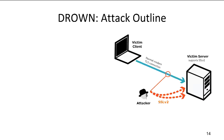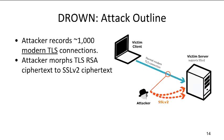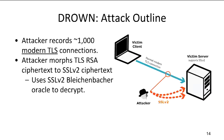Let's come back to the DROWN attack outline. The attacker observes TLS connections, records roughly 1,000 of them, and can hope to decrypt roughly one out of those thousands. The attacker then tries to morph a TLS RSA ciphertext into an SSLv2 one — remember, those are slightly different because the lengths are slightly different — and uses the SSLv2 Bleichenbacher oracle we just described to identify when a valid SSLv2 ciphertext has been generated.